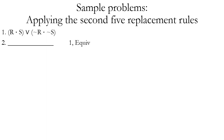Another sample problem: we have a disjunction where the first disjunct is a conjunction R and S, and the second disjunct is a conjunction of their negations. So if we use the material equivalence rule on line one, it becomes simply R triple bar S, because this is the same as saying that R and S have the same truth value — if one's true the other's true, if one's false the other's false, which is what the triple bar means.